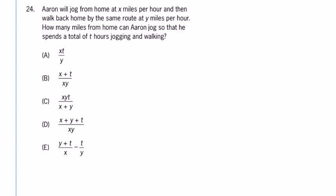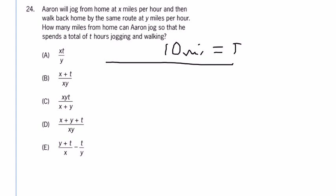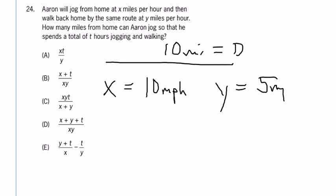The method I am a fan of — the method I just showed you, by the way, is the one you'll find in the official guide for the GMAT. My way of solving this problem, and literally as a PhD mathematician this is how I would solve it on the test: I would say, what if Aaron was going on a 10-mile jog? So that's the distance. And what if he jogs at 10 miles per hour? And what if he walks at 5 miles per hour? I made those numbers up on purpose to be easy.